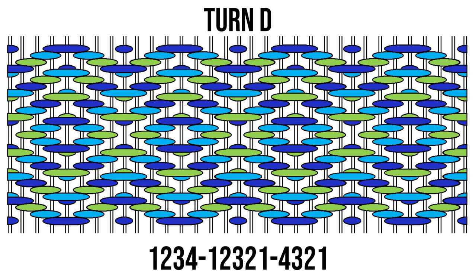To make the final turn, we'll pivot on shed 3. Treadle 1234-12321-4321 to make the final turn type.